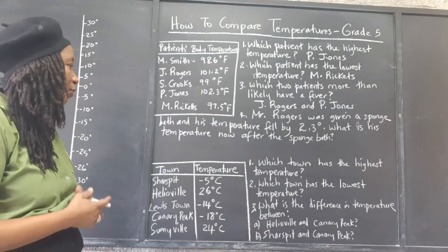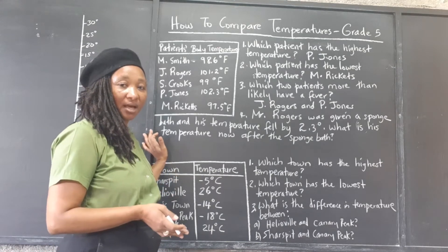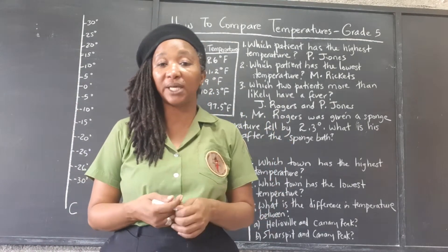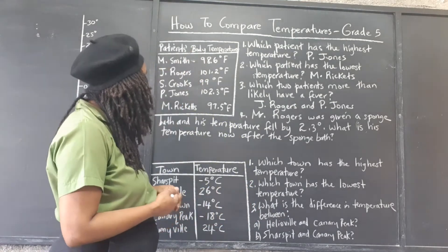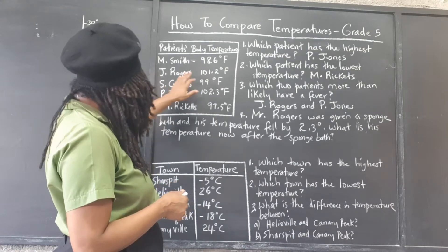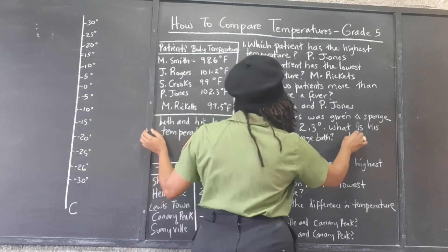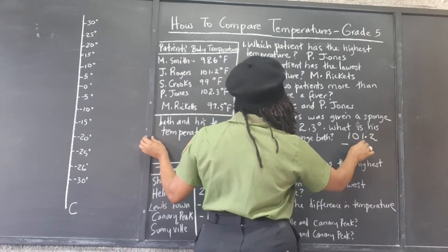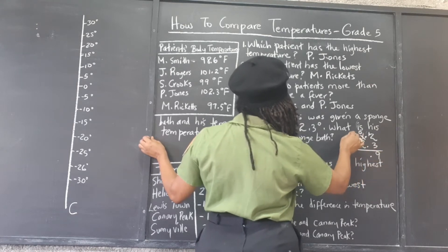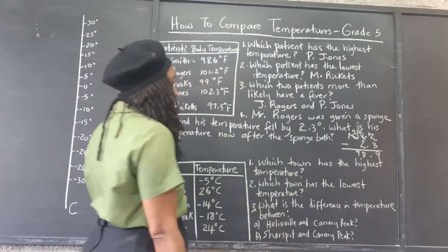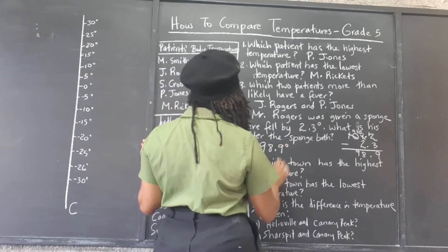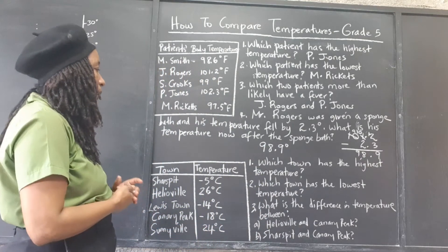Number 4 says Mr. Rogers was given a sponge bath and his temperature fell by 2.3 degrees. When you get sponged down, take a shower, or drink lots of fluids, that can bring down your temperature. His temperature was 101.2, and subtracting 2.3 degrees, it is now 98.9 degrees Fahrenheit after the sponge bath.